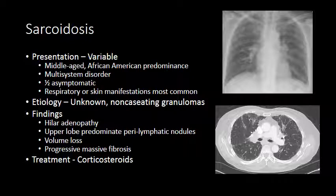Moving from diffuse to nodular lung disease, sarcoidosis is one of the more common nodular interstitial lung diseases. It has a variable presentation due to its ability to affect multiple organ systems. Sarcoidosis is typically diagnosed in middle-aged African Americans. A large number of patients are actually asymptomatic at diagnosis. Respiratory and skin manifestations most commonly bring patients to diagnosis, although cardiac sarcoid and related arrhythmias are common as well.